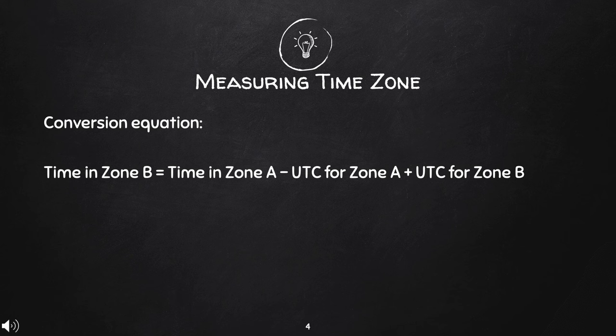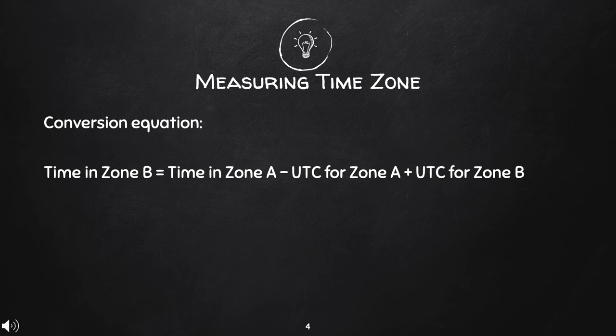How do you measure time zones of different countries? We have here a conversion equation: Time in zone B equals time in zone A minus UTC for zone A plus UTC for zone B. This can be quite confusing, so I will show you two examples on how to measure the time zones.